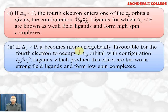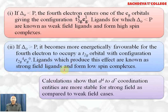If Δo is greater than P, it becomes more energetically favorable for the fourth electron to enter the t₂g orbital, giving configuration t₂g⁴ eg⁰. These ligands are known as strong field ligands and form low spin complexes because there are no or minimum unpaired electrons. Calculations show that d⁴ to d⁷ coordination entities are most affected by strong vs weak field cases.